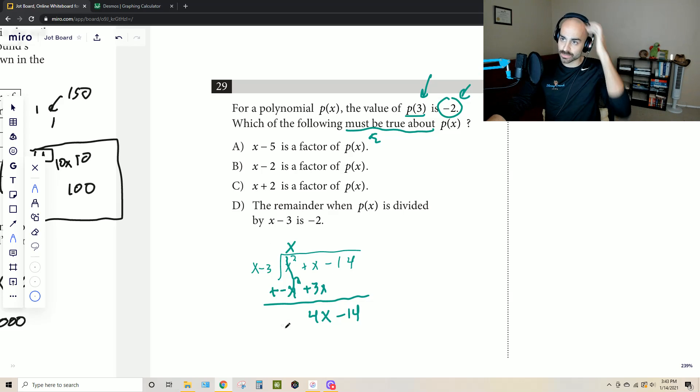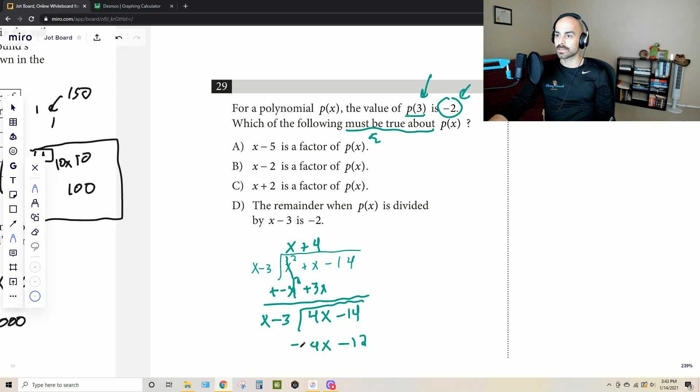Now I ask myself, x minus 3 has to go into this here and I need to know, how many times does x go into 4x? Well that'd be four times, and since that's positive I would plus 4 and then I can now subtract the product of this and this from this. So 4 times x is 4x. 4 times negative 3 is negative 12